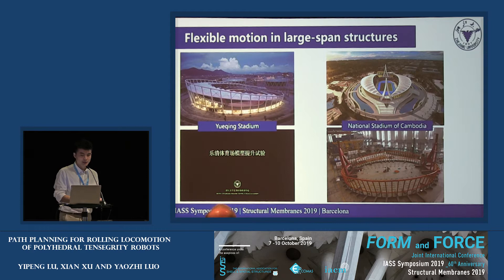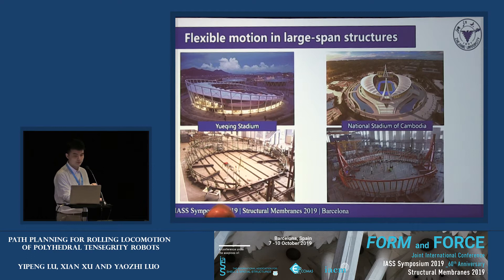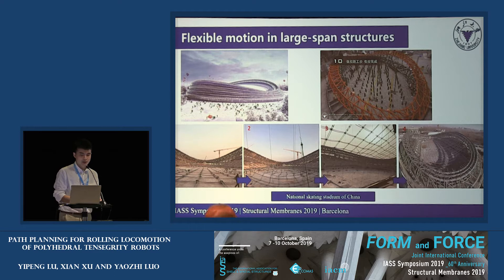When the stage changes, the rotating stand turns around to provide the audience with the best perspectives. Rigid body motion can also be applied to the construction of large span structures, where different parts are lifted step by step to find the shape of the structure. In the construction of the National Skating Stadium of China, the cable net was assembled on the ground and then lifted to the top of the stadium.